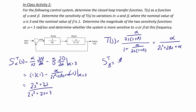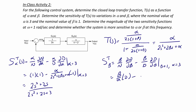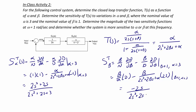Now let's derive the sensitivity function for beta. We get beta over N times the partial derivative of N with respect to beta, minus beta over the denominator times the partial derivative of the denominator with respect to beta, evaluated at beta equal to 1 and alpha equal to 3. This equals beta over alpha minus beta over (2S squared plus 2 beta S plus alpha) times 2S, which simplifies to negative 2S over (2S squared plus 2S plus 3).